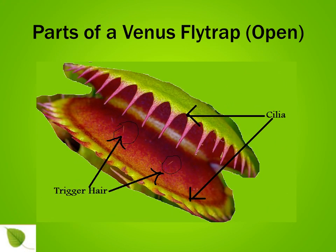These, my friends, are the parts of a Venus flytrap which is open. The teeth-like structure which you can see is called the cilia, and the short strands of hair are called the trigger hair.